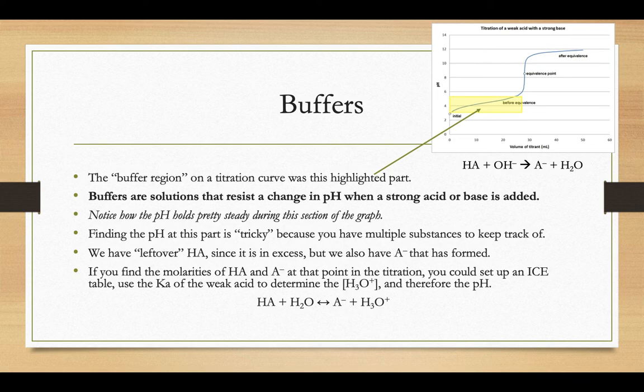You have leftover HA, leftover weak acid, because it's in excess at that part on the graph, but you also have some of that A minus that has formed. The amount of A minus that has been formed will be dependent upon the limiting reactant there. In this case, the hydroxide ion would be your limiting reactant because you haven't yet hit your equivalence point.